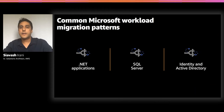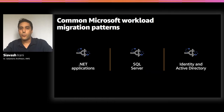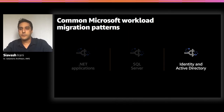If we look at different layers of Microsoft workloads, identity and Active Directory is typically the core of the application for authentication and authorization. Then we usually have Microsoft SQL Server for the database layer, and then .NET applications which work with Active Directory and SQL Servers. Let's talk about different options and patterns for migrating Active Directory to AWS.